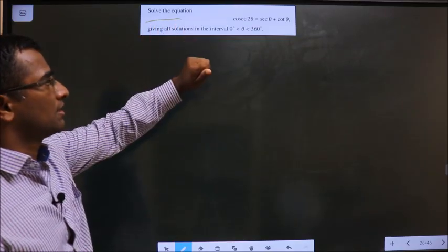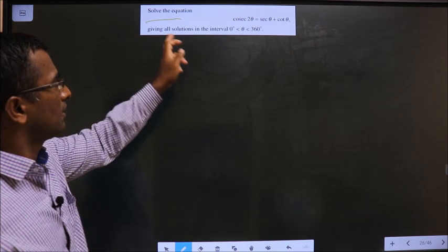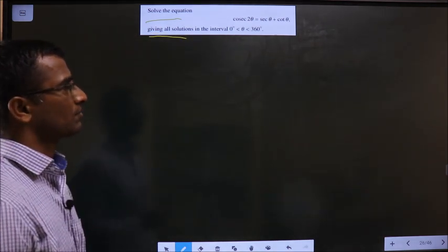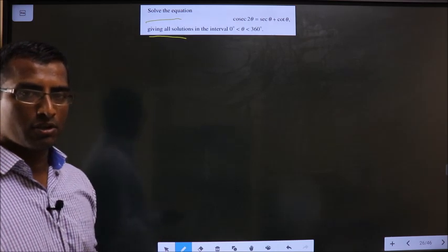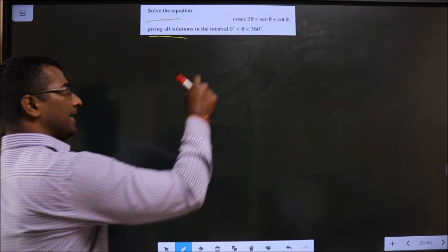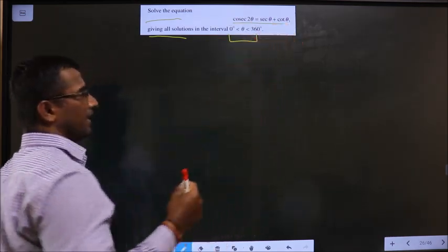Solve the equation cosecant 2θ equal to secθ plus cotθ, giving all solutions in the interval 0 to 360. You need to find the values of theta in the interval 0 to 360 satisfying this equation.